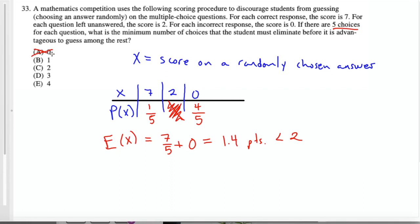So we can expect about 1.4 points on average in the long run, which is less than 2. So it's actually better to leave it blank rather than randomly guessing. Let's imagine that we eliminated one of the choices. Now we have a 1 in 4 chance of guessing it right. The new expected value with four choices is 7 times 1 fourth, which gives us 7 fourths, and that's 1.75 as a decimal, which is still less than 2. Now what if we eliminated two choices? Now there's a 1 in 3 chance of guessing correctly. The expected value is 7 times 1 third, which is 7 thirds as a fraction, or 2.3 repeating as a decimal, which is greater than 2. So in this case, it's advantageous for us to guess because in the long run, we'll expect an average of 2.33 points. So the answer is C.